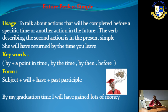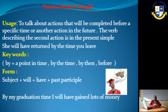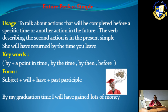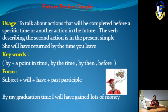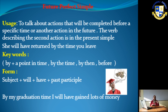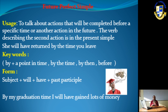Now let's move to the Future Perfect Simple. We use it to talk about an action that will be completed before a specific time or before another action in the future. The verb describing the second action is in the present simple. For example: 'She will have returned by this time' or 'by the time you leave.' It means she hasn't returned yet, but she will have returned before you leave — so you won't see each other.